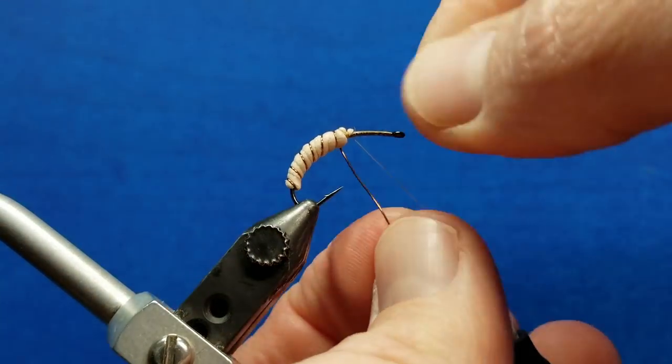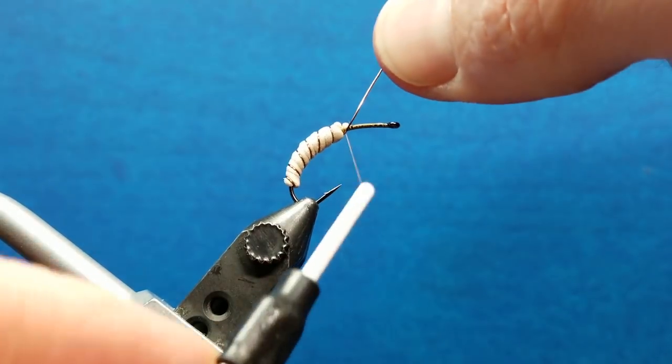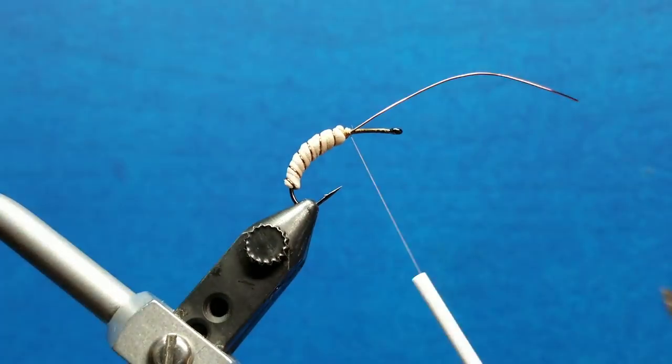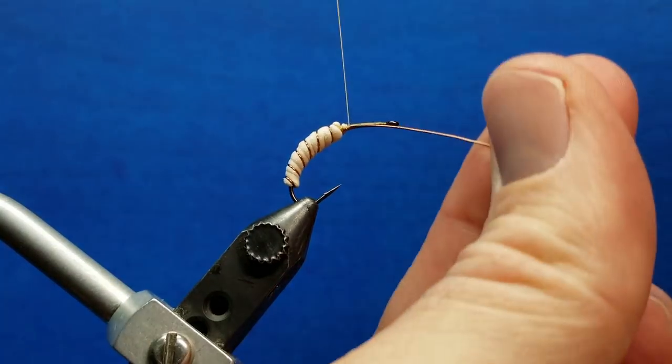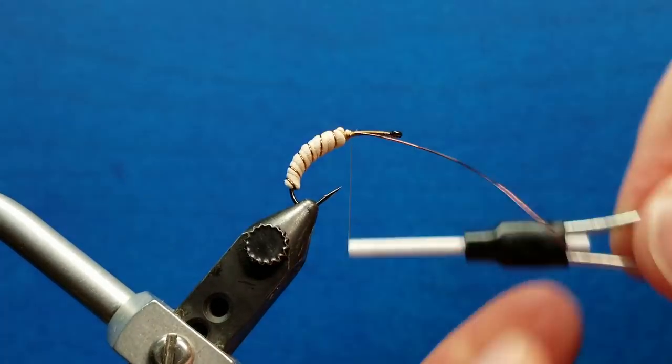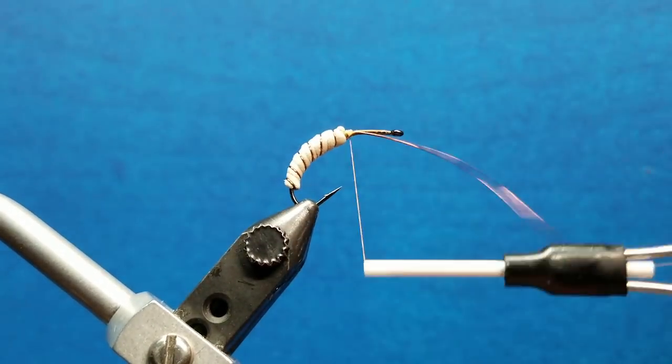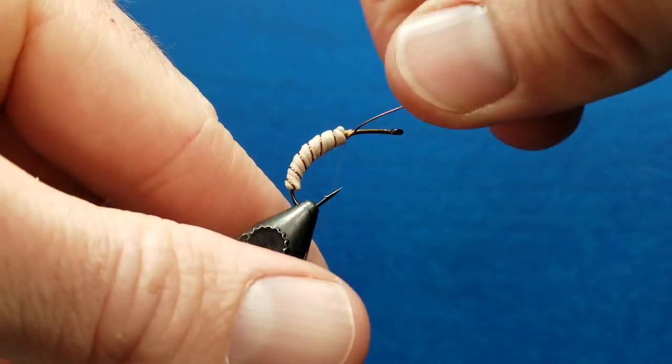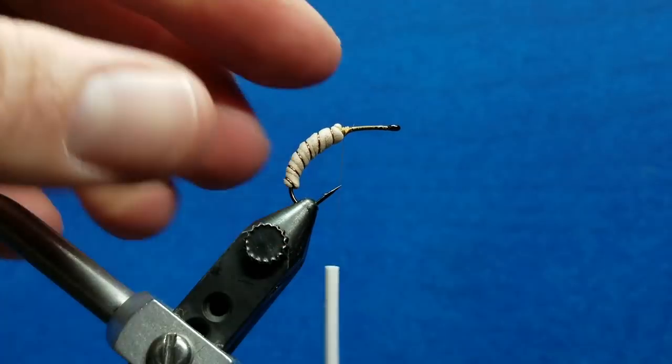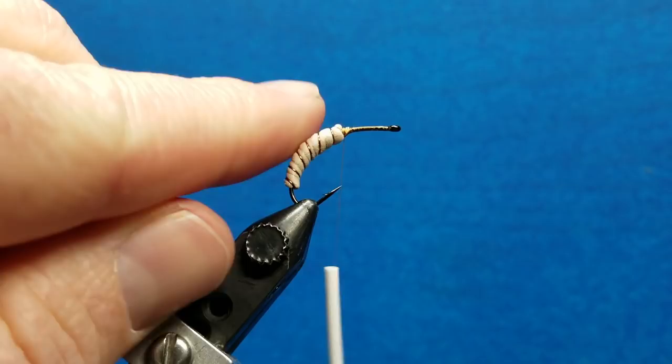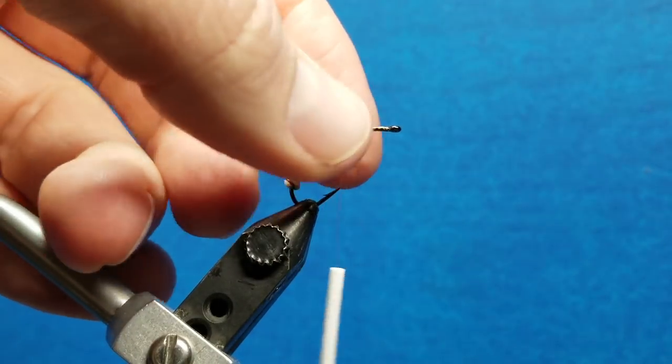I'm going to bring this around and in the last wrap, I'm going to pull it up. And as I tie it off, I want to tie it off parallel to the hook shank. Probably five or six good wraps. The reason why is when I helicopter it and it breaks off, it runs parallel to the shank. It's not going to stick up or down and cause me trouble or catch my thread.